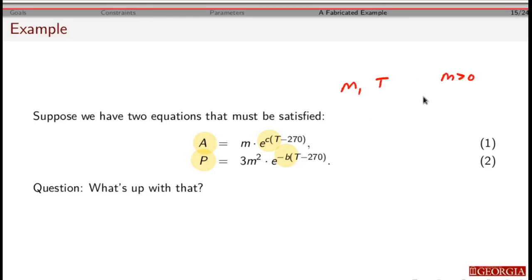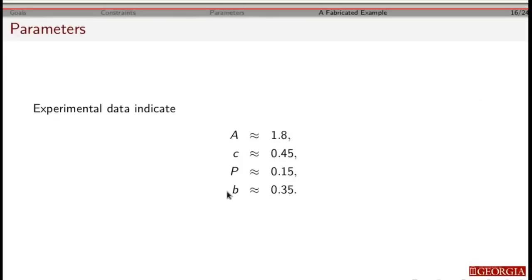We assume mass is positive, and temperature is in Kelvin so it must also be positive. We're going to solve both equations for m, since solving for m looks easier algebraically. Before we do that, suppose we ran an experiment and got estimates for these parameters: a, b, c, p, and b. I'm going to focus on the sensitivity for just c — for the project you'll look at sensitivity for all of these and compare.